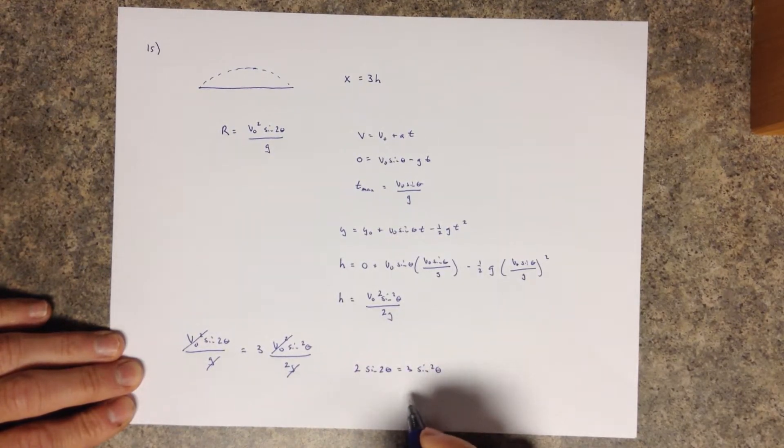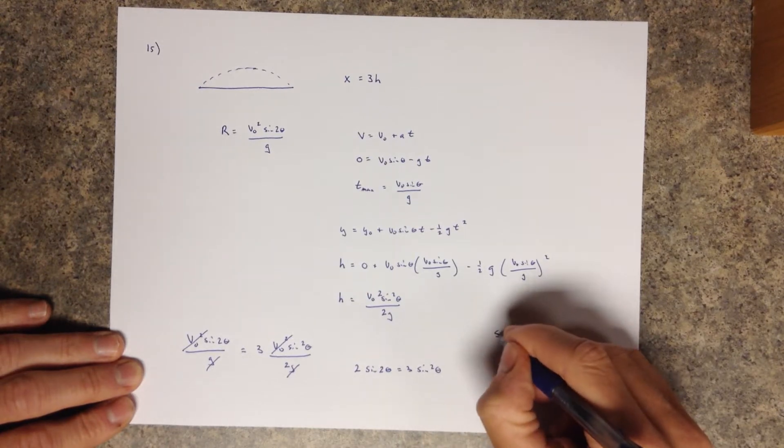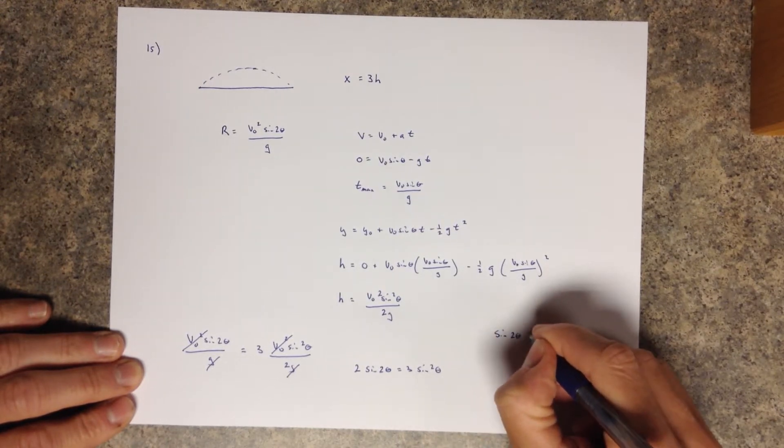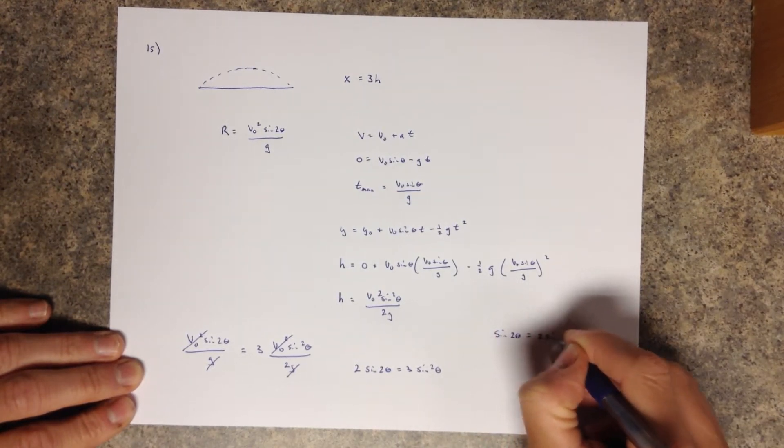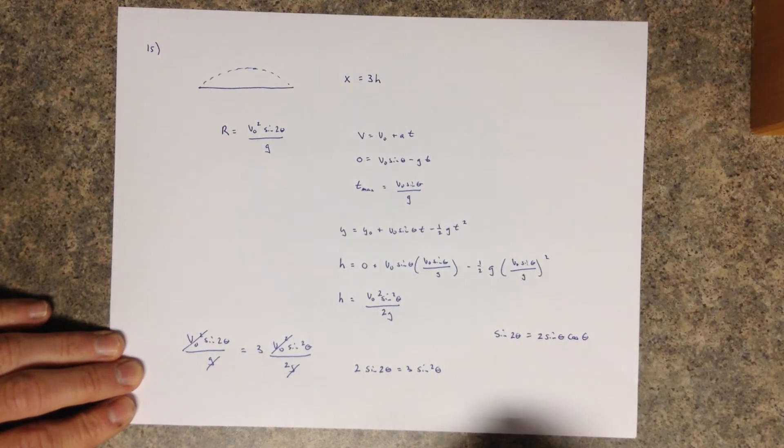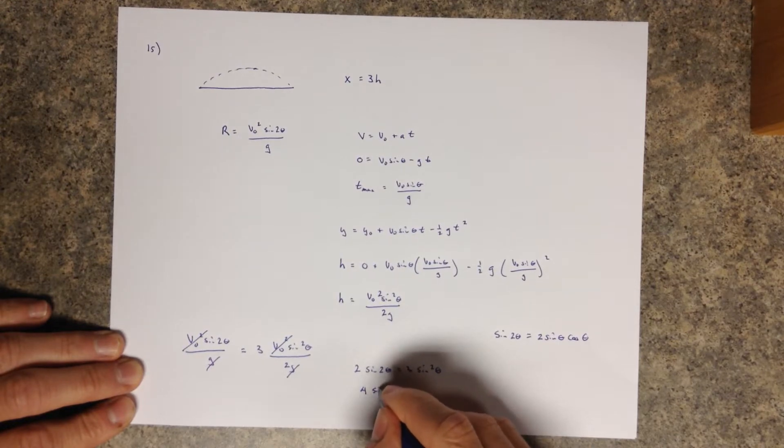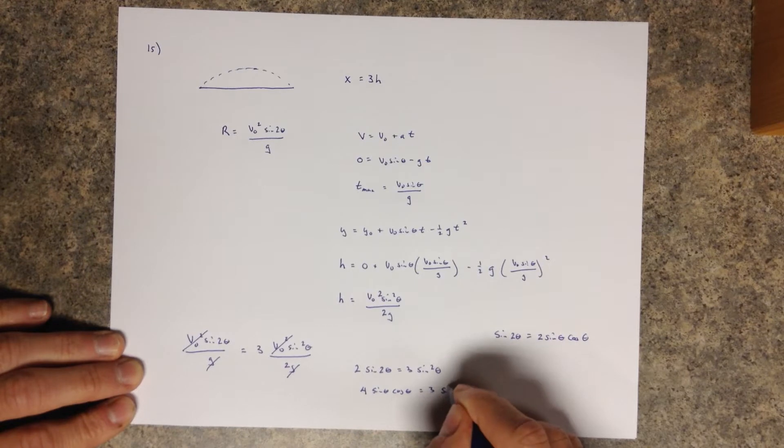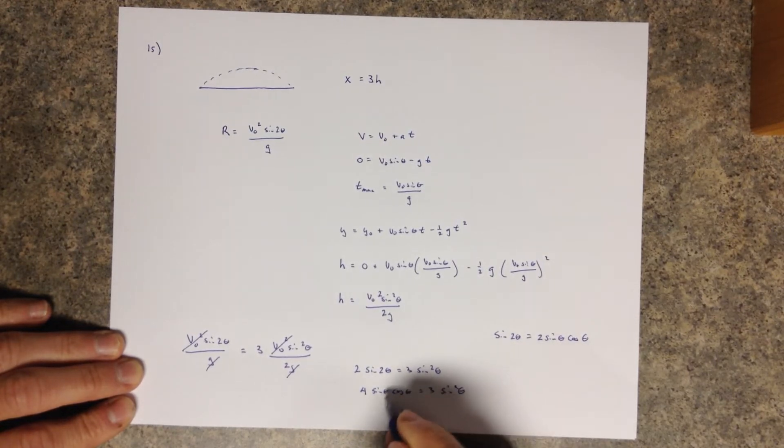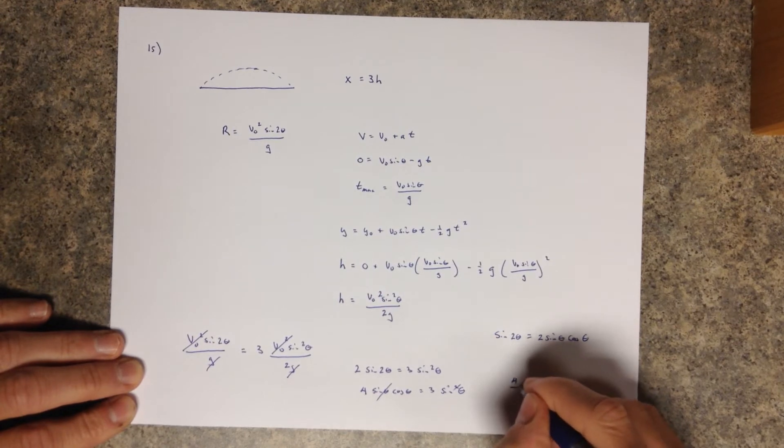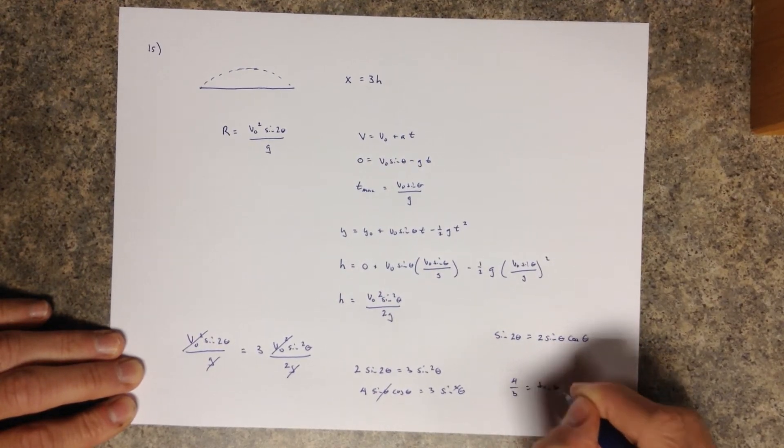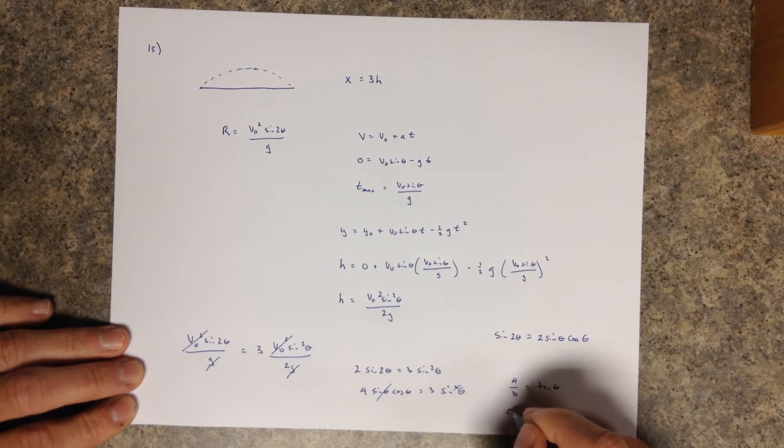And we can do some manipulations. What we can figure out is that sine 2 theta is equal to 2 sine theta cosine theta. And so if we do then, then we really get 4 sine theta cosine theta equals 3 sine squared theta, which allows us to cancel one of those. We can divide, and we end up getting that 4 thirds equals tangent theta. And we get theta then to equal 53 degrees.